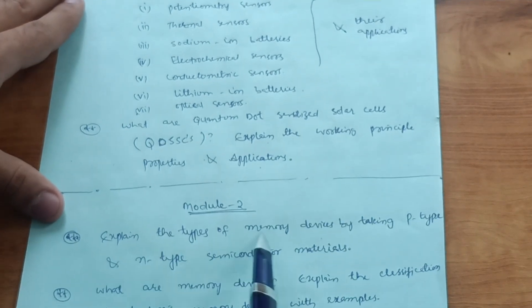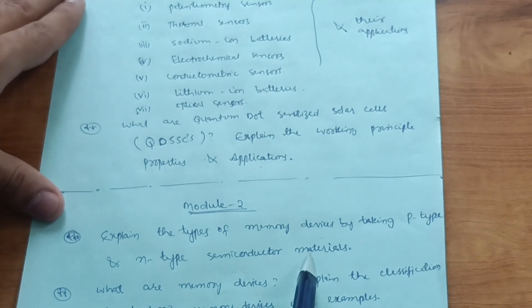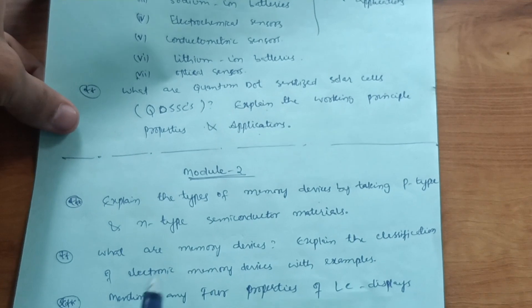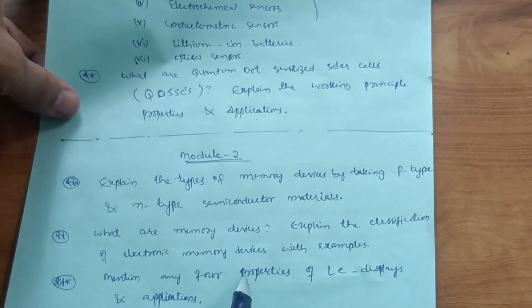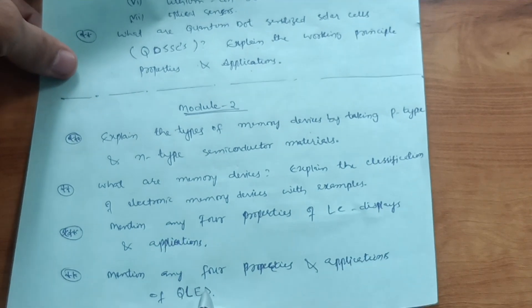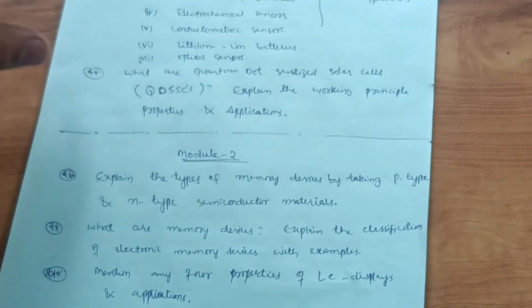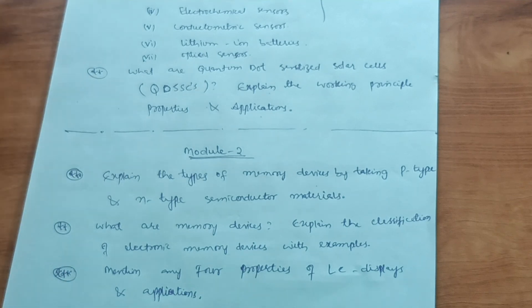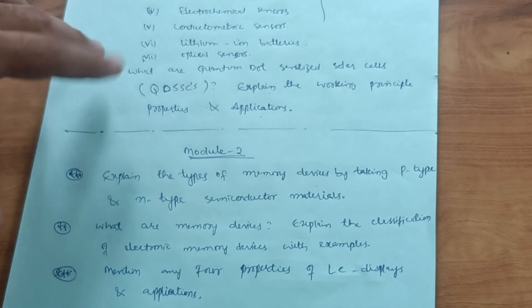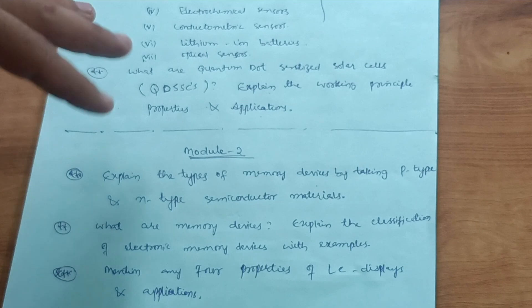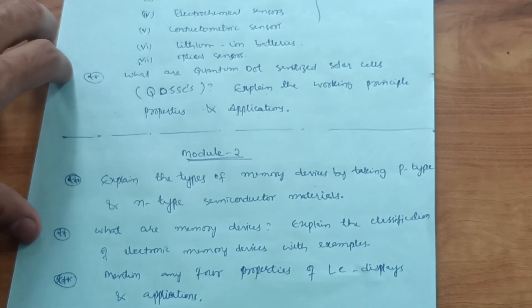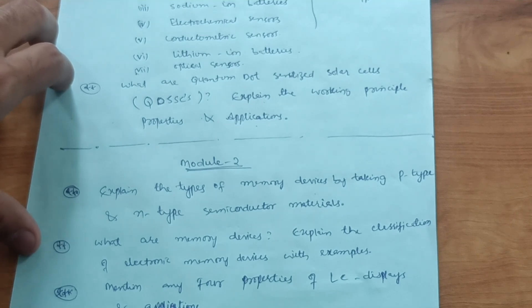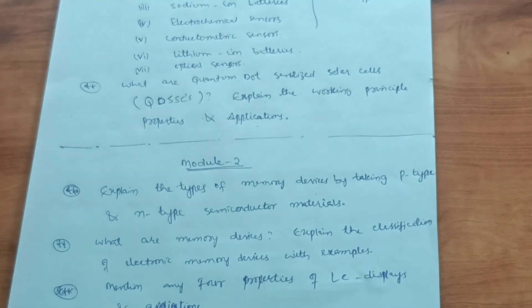Module 2 important questions include: explain the types of memory devices using p-type and n-type semiconductor materials; what are memory devices — explain the classification of electronic memory devices with examples; mention any four properties of LC displays and their applications; and mention any four properties and applications of QLEDs. If you want to score 90 to 100 out of 100 you need to cover more content, but this much is enough to pass and even score 70 to 80 marks. Focus on this content to conquer this subject. Thank you for watching.